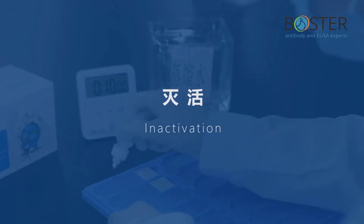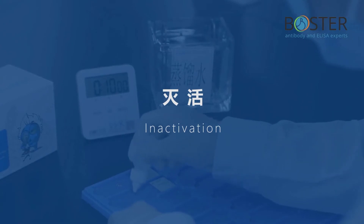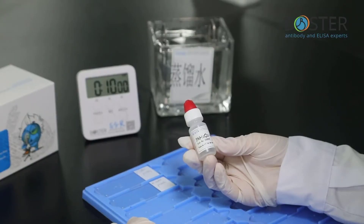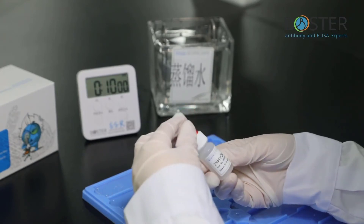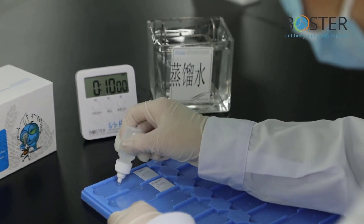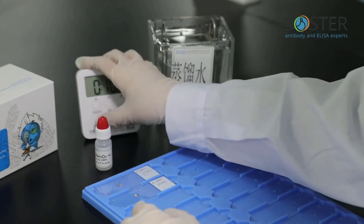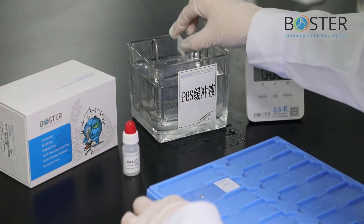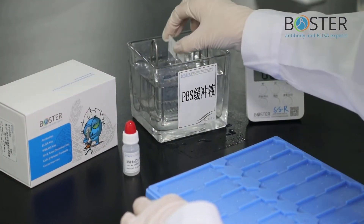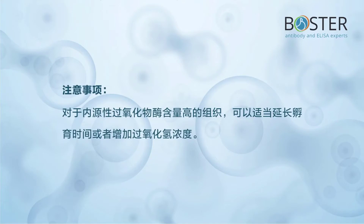Step 3: Inactivation. The purpose is to inactivate endogenous peroxidase and to reduce the interference of endogenous peroxidase on the chromogenic system. This is the endogenous peroxidase blocking solution used in the inactivation process. Add one drop of endogenous peroxidase blocking solution. Incubate at room temperature for 10 minutes. Wash with PBS buffer three times, five minutes each time. Precautions: for tissues with high endogenous peroxidase content, the incubation time should be appropriately extended, or the concentration of hydrogen peroxide should be increased.